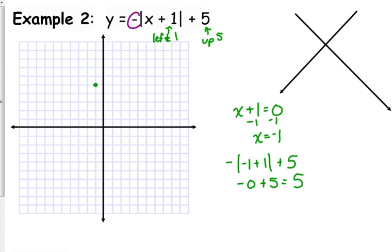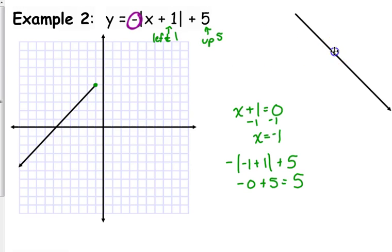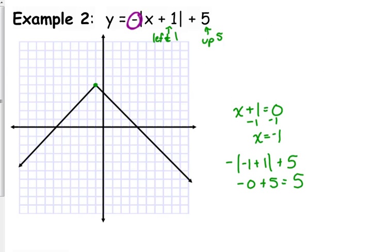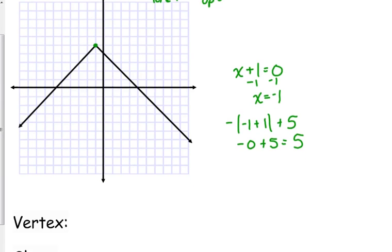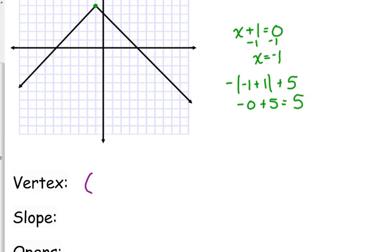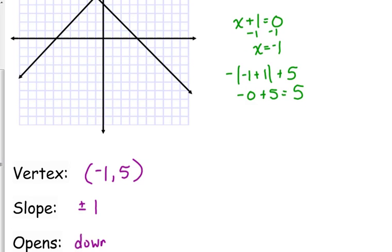That negative in front of the absolute value is going to take all your y values — when you plug in a number for x, you take the absolute value and get a positive number, but then the negative in front makes it negative. So it flips the function over. On the left side the slope is positive 1, on the right side it is negative 1. So this one opens downward.